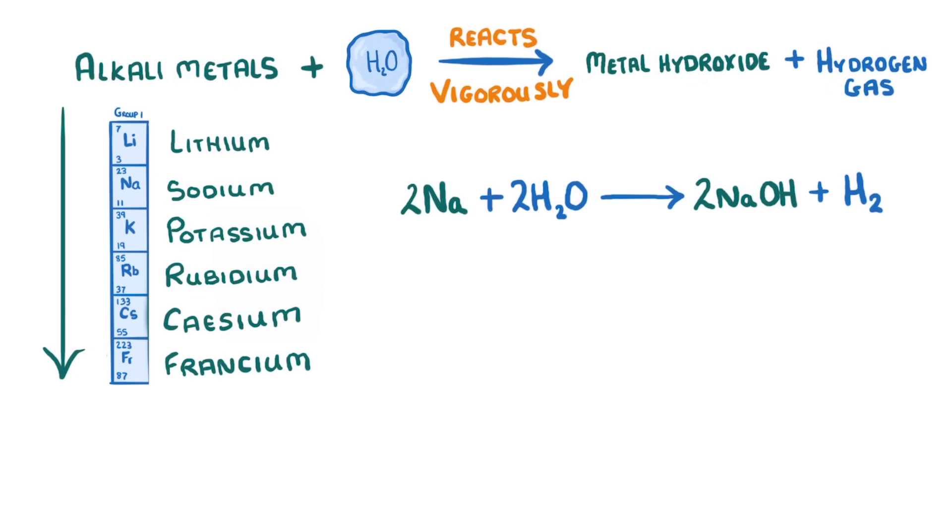As we mentioned earlier, the metals become more reactive as we go down the group, and so the reactions will release more energy. In fact, from potassium onwards, so much energy is released that it ignites the hydrogen gas that gets produced, which we can see in the form of flames.